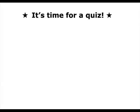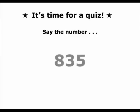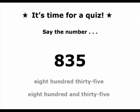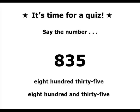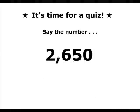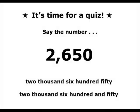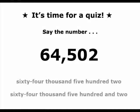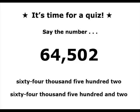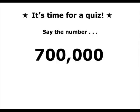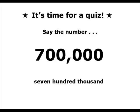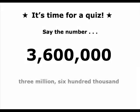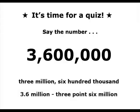Okay, let's try a quiz. Say the number. 835. 2,650. 64,502. 700,000. 3,600,000. Or 3.6 million.